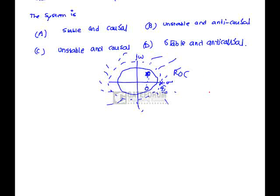Hence ROC is not including unit circle. Hence it is an unstable function. But it is having a right-sided ROC, hence it is a causal one. Hence option C is correct.